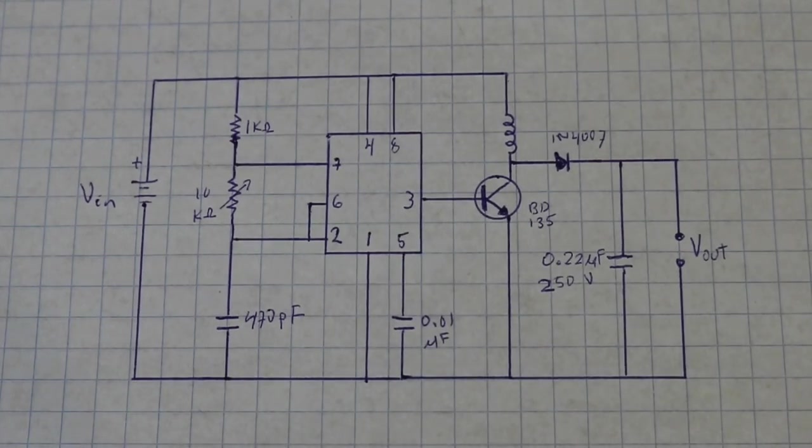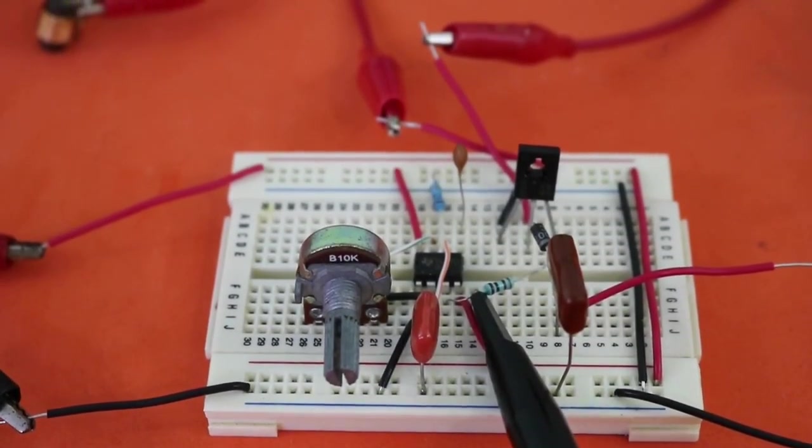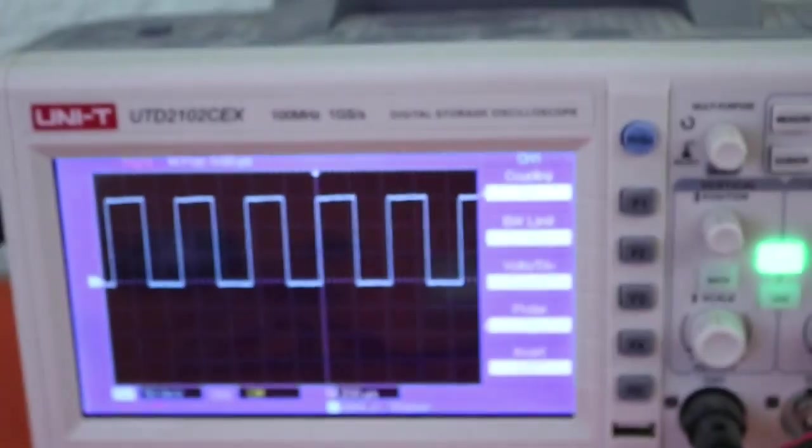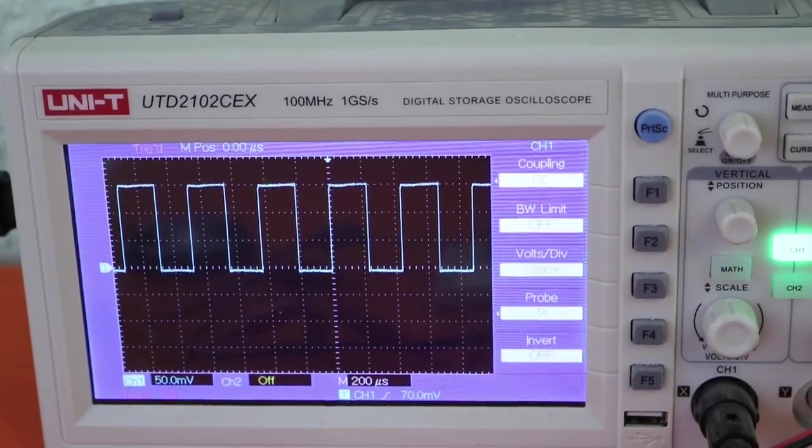Let me show you in the oscilloscope. I connected the oscilloscope to pin 3 of the timer and here you can see the train of rectangular pulses that we obtain.